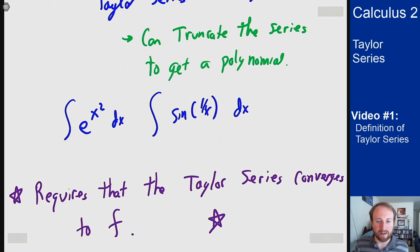And that's what we'll deal with more in this section is when do these converge, how do we know they converge, and when do we know they converge to our actual function so that we can use them for these sorts of properties.